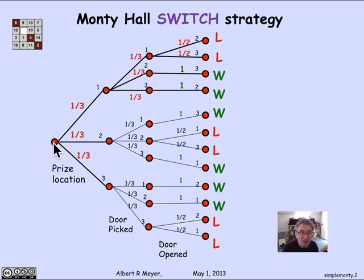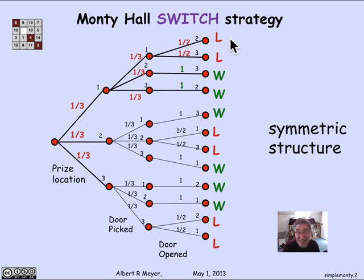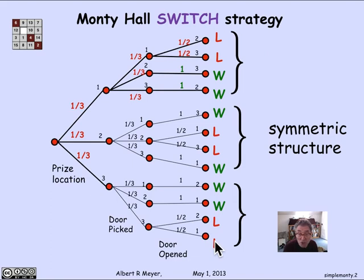That is, we literally thought of each of the three outcomes of whether the prize was behind door one, door two, or door three, and then exactly which door the contestant picked next — door one, door two, or door three, and so on. And it's clear that this tree has a symmetric structure. That is, these three subtrees — whether the prize is behind one, two, or three — all have the same structure. And we could have gotten away with analyzing one and deduced that that's what happened with the other two branches.